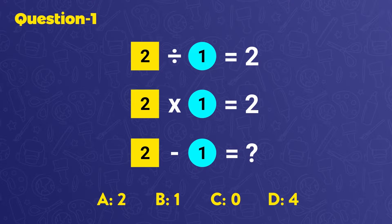When we subtract the circle from the square, we will obtain 1. The right answer is B.